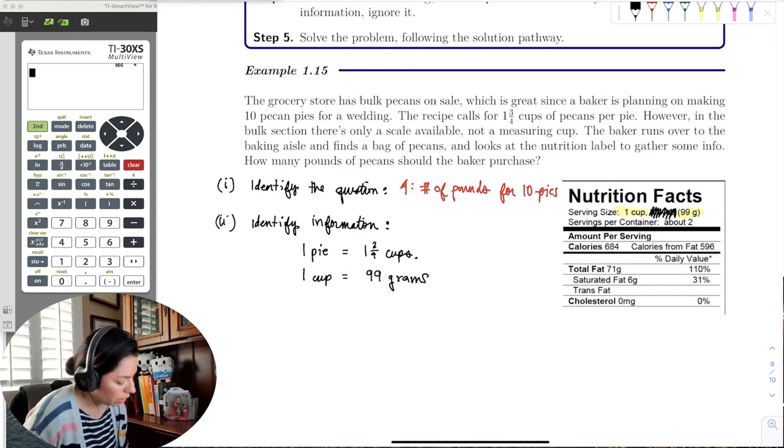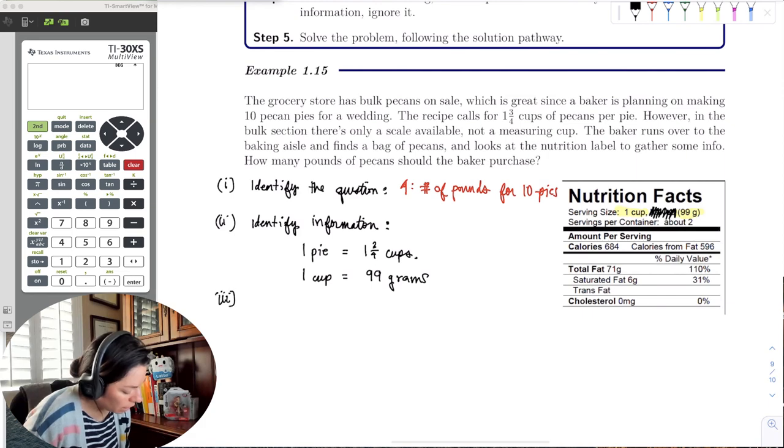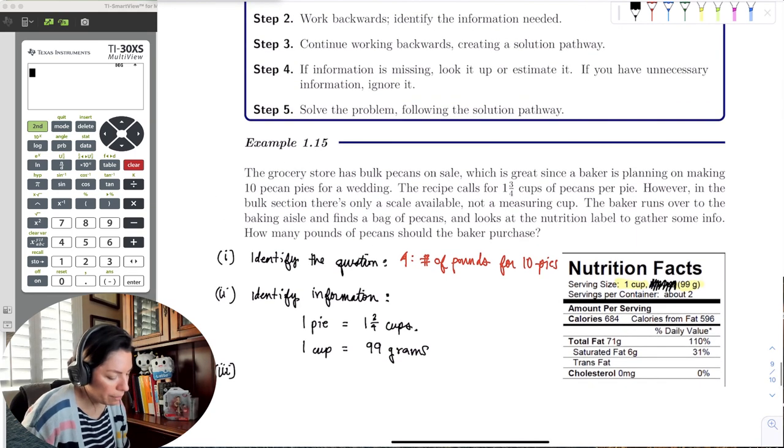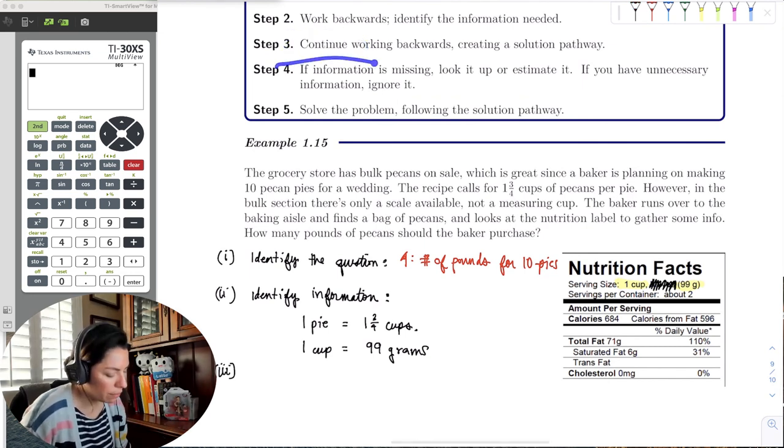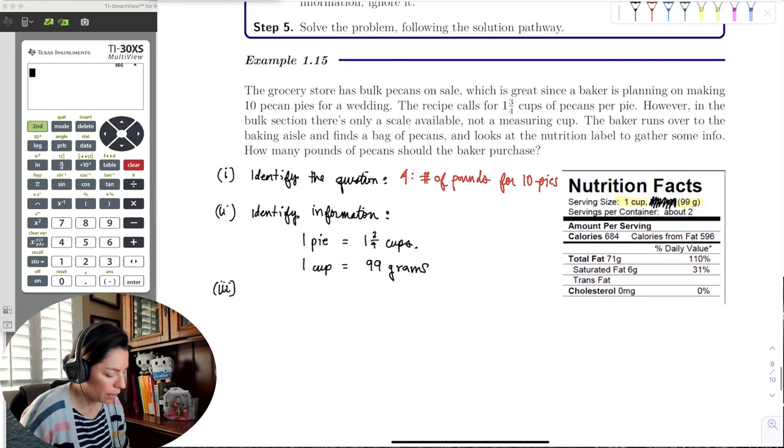The next part, it says work backwards. Identify the information needed. So the second part would be to identify information.